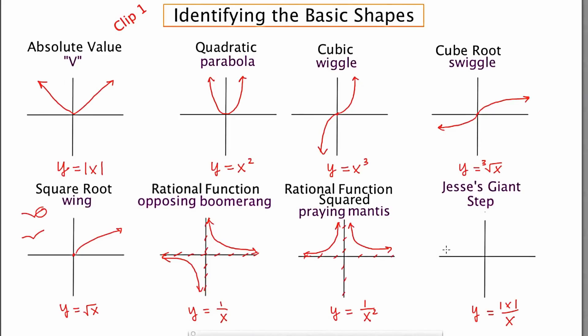Now this final one is Jesse's giant step. This one's interesting. We have the absolute value of x over x. And whenever we have x over itself or anything over itself, it ends up being 1. However, there are certain cases where if x is negative, you're going to get negative 1. So the graph ends up looking like this.